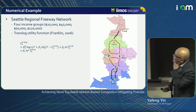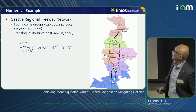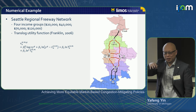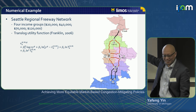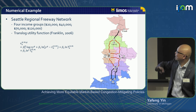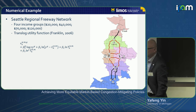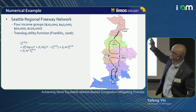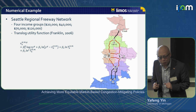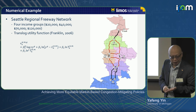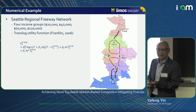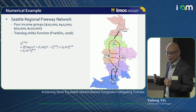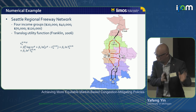Let's look at the numerical example, which we did roughly 15 years ago. We used a realistic network from Steve Boyle's dissertation at UT Austin, with OD demand, calibrating best we could using Franklin's utility function estimates for the area. We divided the whole region into four income groups: on average $20K, $40K, $70K, and $120K. The income levels should be much higher now — this was done 15 years ago — and you can definitely classify into more income groups, but we controlled the problem size.